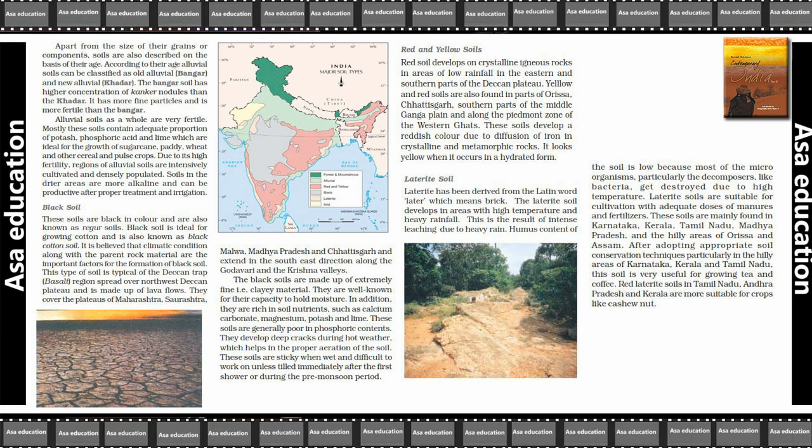Black soil is made up of extremely fine clay material. It is well known for its capacity to hold moisture. In addition, it is rich in soil nutrients such as calcium carbonate, magnesium, potassium and lime. These soils are generally poor in phosphoric content. They develop deep cracks during the hot weather, which helps in the proper aeration of the soil.